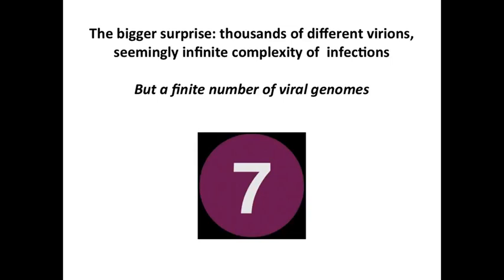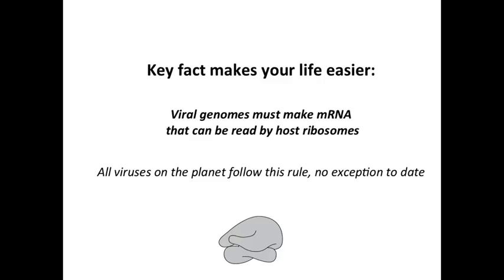That number is seven — and that's a number you should remember because it's easy. When you count up to seven you'll be done. Seven different kinds of genome will really help you organize all these viruses in terms of how they work. The key fact that will help organize all of this, in addition to the number seven, is that every viral genome has to make mRNA that the host can translate, because no virus encodes a complete translation apparatus — viruses are parasites of the host translation system.